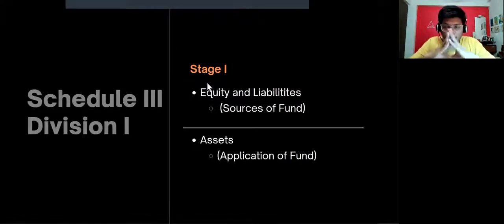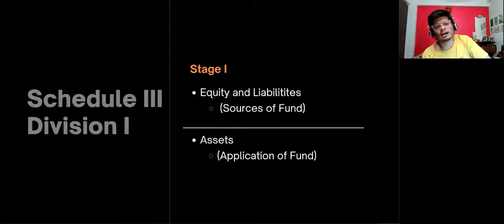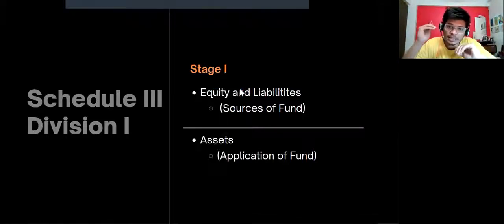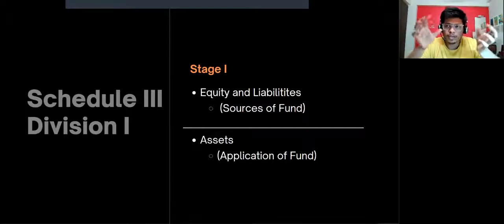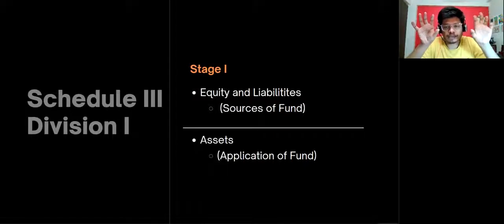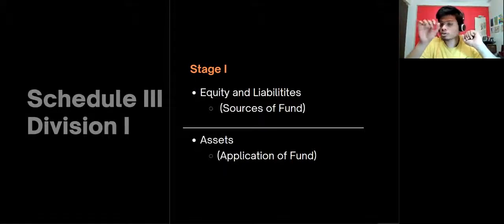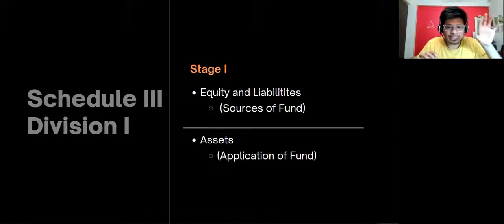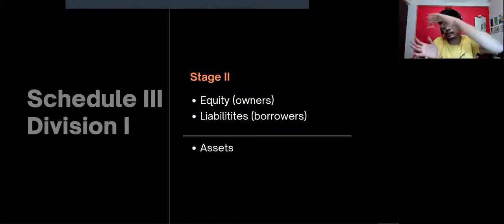I've broken the balance sheet down into multiple stages so it's easier to grasp slowly, rather than looking at the entire format at once. The first thing about the balance sheet is there are three things: equity, liability, and asset. The entire purpose of the balance sheet is to show where my sources of funds are and where I am applying them.